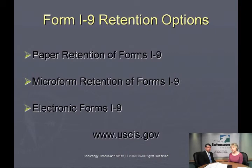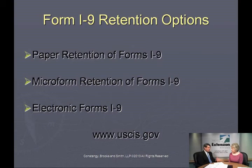You can retain I-9s three different ways: paper retention, microfilm — I don't know many people doing that anymore — or electronic forms retention. Large employers a lot of times are setting these up as totally electronic documents. They're having employees come in and electronically sign in their blocks, having the employer section electronically signed, and storing them totally electronically. Or you can do paper, fill them out, scan them in and save them electronically.